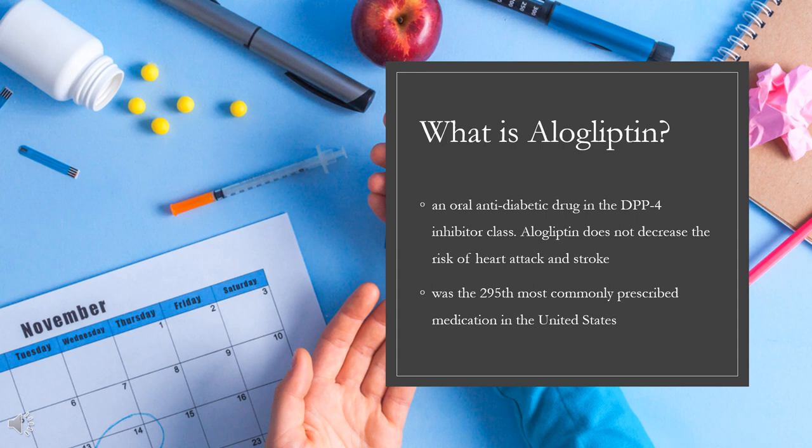Alogliptin, sold under the brand names Nesina and Vipidia, is an oral antidiabetic drug in the DPP-4 inhibitor class. Alogliptin does not decrease the risk of heart attack and stroke. In April 2016, the U.S. Food and Drug Administration (FDA) added a warning about increased risk of heart failure. It was developed by SYRRX, a company which was acquired by Takeda Pharmaceutical Company in 2005.